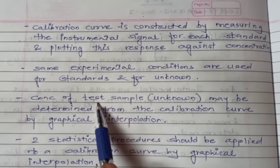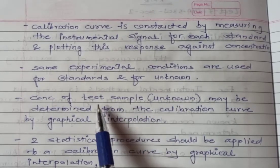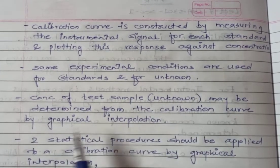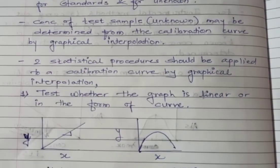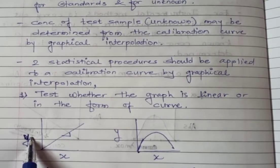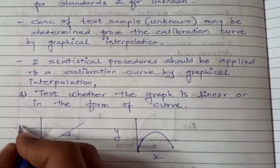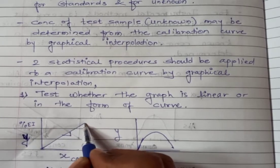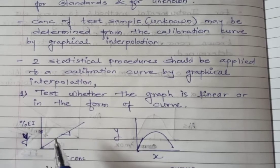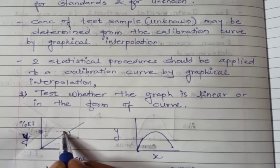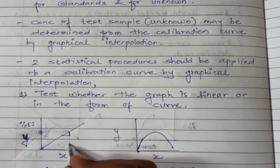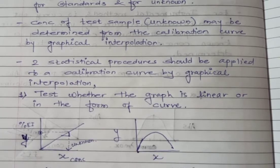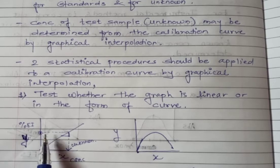The concentration of the unknown substance — also called the test sample — can be determined from the calibration curve by graphical interpolation. For example, on a graph with flame emission intensity on the y-axis and concentration on the x-axis, the line obtained for standard substances is drawn. The signal observed for the unknown is then interpolated on this line to get the concentration of the unknown substance.